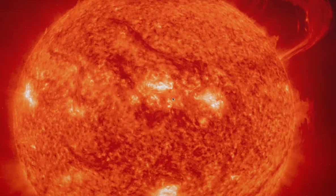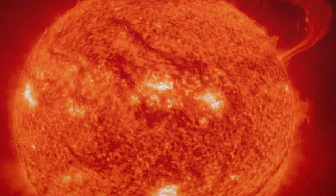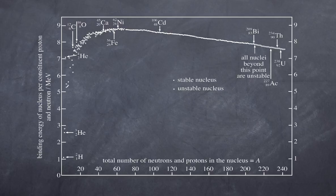Welcome back to High School Physics Explained. My name is Paul and today I would like to talk about nuclear fusion. In essence, nuclear fusion is the production of energy by combining two smaller atoms into a larger atom. We have a picture here of the sun because that is where nuclear fusion takes place.